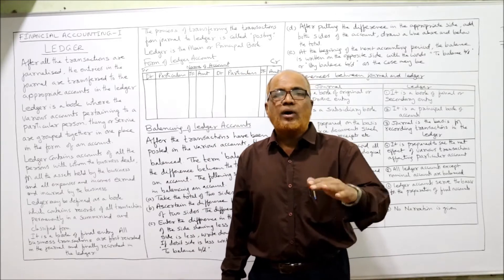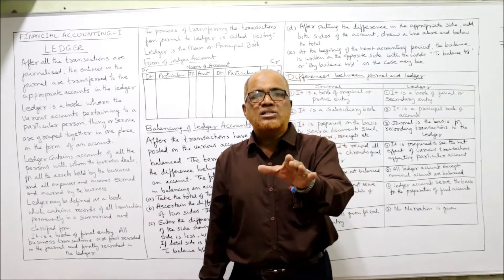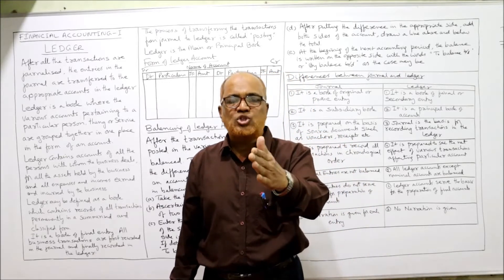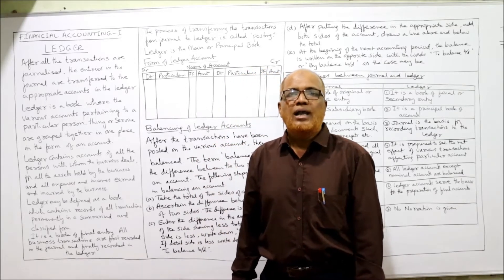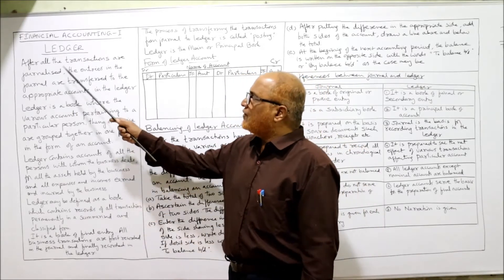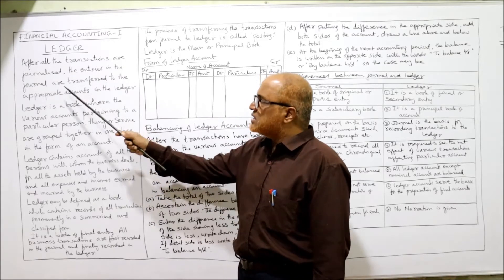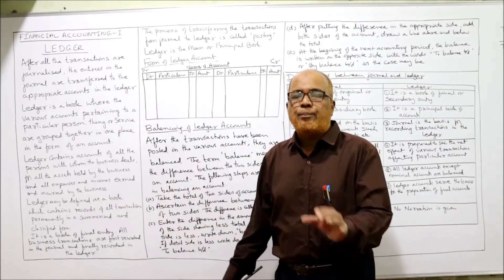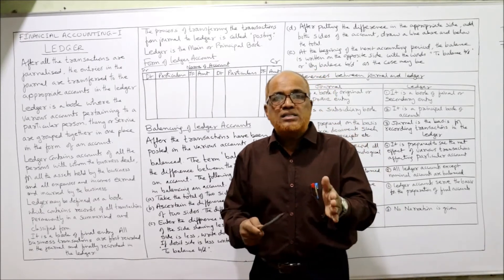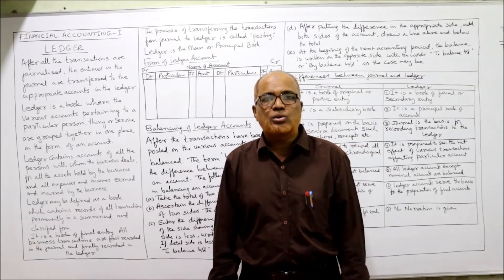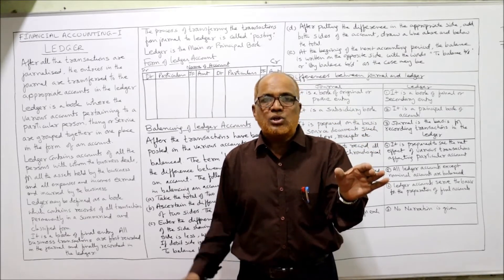At the end of the day or at the end of the week, periodically we transfer transactions from the journal to another book called the ledger. After all transactions are journalized, the entries in the journal are transferred to appropriate accounts in the ledger.